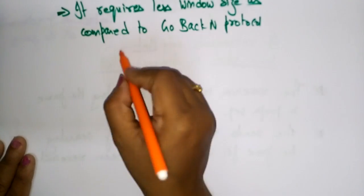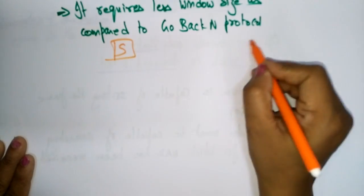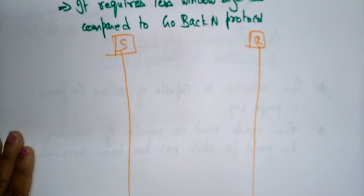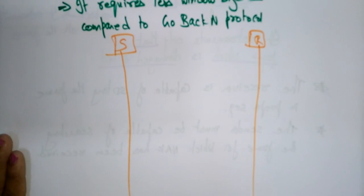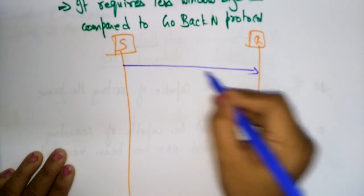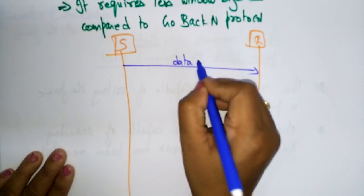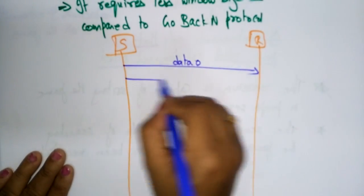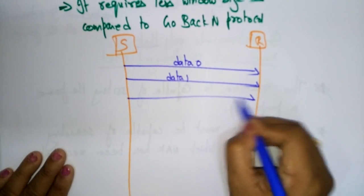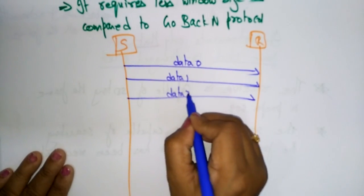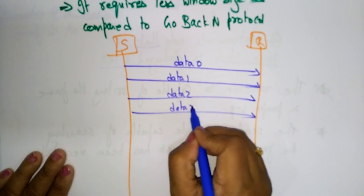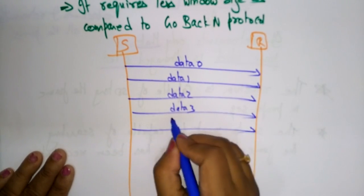Let me explain with a simple example. The sender is on one side and the receiver on the other — it's a simple concept just like Go-Back-N, but only the damaged frame is retransmitted. So first, data 0 is sent; the receiver receives it, then data 1, data 2, and I'm sending data 3 and data 4.